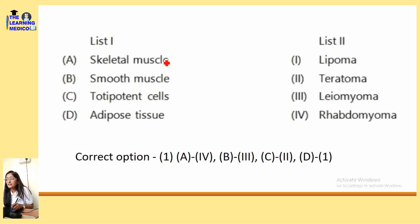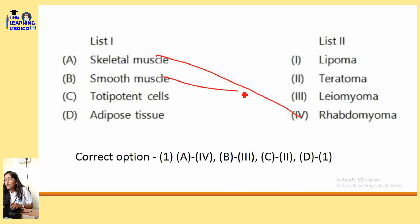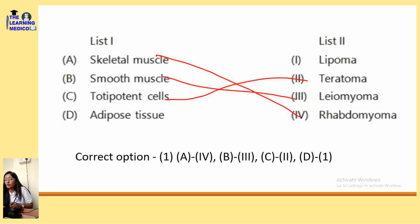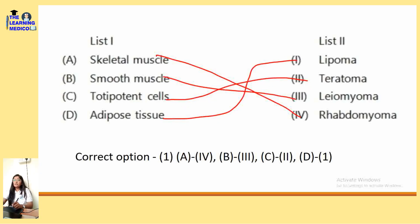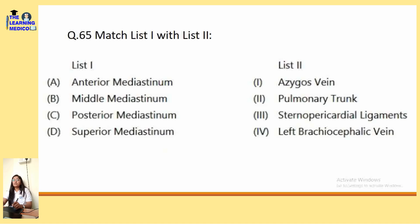Skeletal muscles are affected by Rhabdomyoma. Smooth muscles are affected by Leiomyoma. Totipotent cells give rise to Teratoma. Adipose tissues are affected by Lipoma. This is a match-the-following type question.